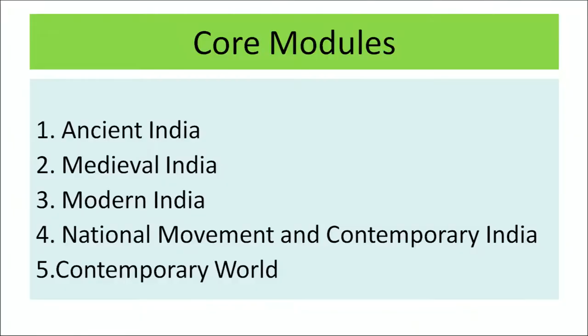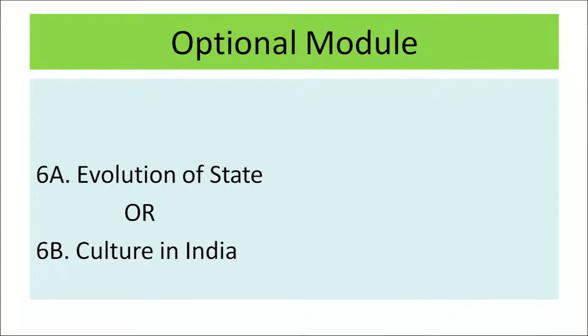The curriculum has 5 core and 1 optional module. The core modules are: Module 1 – Ancient India, Module 2 – Medieval India, Module 3 – Modern India, Module 4 – National Movement and Contemporary India, and Module 5 – Contemporary World. For the optional module, there is a choice between Module 6A – Evolution of State or Module 6B – Culture in India. The learner has to choose any one of these two optional modules.